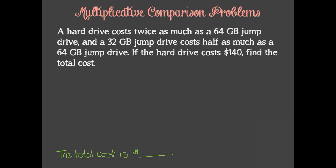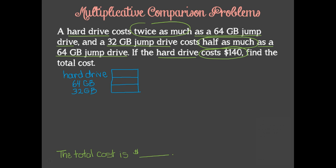When rereading the problem, we identify the important information we need to solve the problem. Since this is a comparison problem, we can start each of the three drives out with equal sized unit bars. We should re-read the problem again to determine which of the three drives costs less, and adjust the others accordingly. It looks like the 32GB jump drive is the cheapest, because it costs half as much as a 64GB jump drive. That means the 64GB jump drive should be twice as many as the 32GB drive, so we can add another unit onto the 64GB bar.